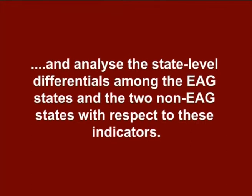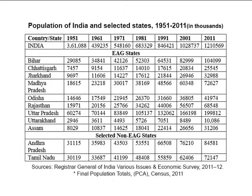The centre is facilitating focused efforts to promote the Reproductive and Child Health program in these states and analyze the state-level differentials among the EAG states and the two non-EAG states with respect to these indicators. Table 1 on your screen shows that among all the states, Uttar Pradesh continues to be the most populous state in the country. The population of eight EAG states is 199.8 million.